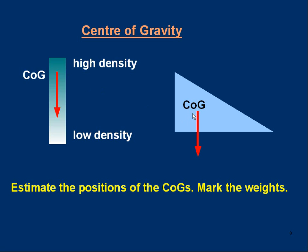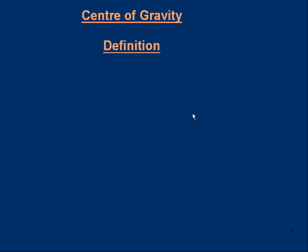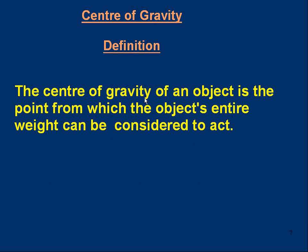Let's give you a definition. The center of gravity of an object is the point from which the object's entire weight can be considered to act. Remember, it's basically an average position — the average of all the other weights' positions.